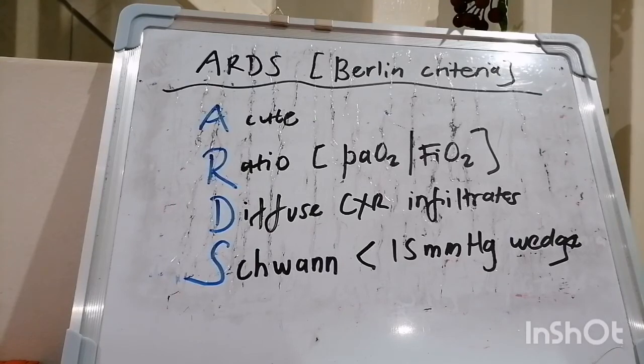Recruitment maneuvers may be used to keep the alveoli open, for instance, intervals of 40 cm water PEEP for 40 seconds at a time. Permissive hypercapnia as well, because we generally tolerate pH of above 7.25, but may need to run bicarbonate infusion to maintain that pH.